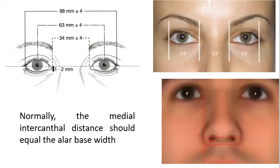Normally, the medial intercanthal distance should equal the alar base width. The nose should also be evaluated for asymmetry. The bony anatomy of the nose should be evaluated by palpation. A nasal speculum is used to visualize the internal aspect of the nose to locate excessive bleeding or hematoma formation, particularly in the area of the nasal septum.